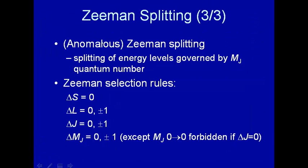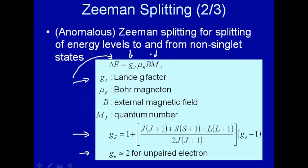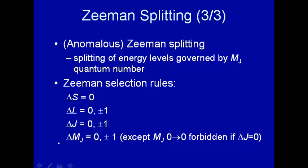Just to summarize, the splitting levels of these anomalous, where you're going from non-singlet state to non-singlet state, is governed by the value of m_j. And again, the Zeeman selection rules are essentially the same as we had for the normal ones. We cannot have a change in multiplicity. Delta s has to be zero. Delta l, zero or plus or minus one. Delta j, zero or plus or minus one. And delta m_j has to be zero or plus or minus one, except for these zero-zero transitions forbidden if delta j is zero. We'll actually now go through some examples and calculate energy level splittings.